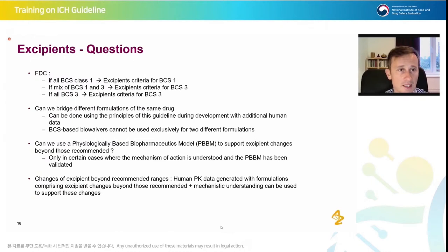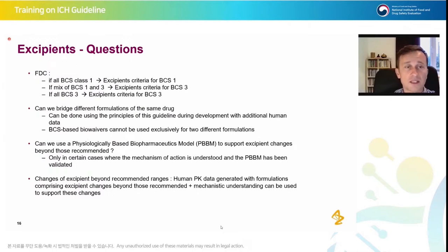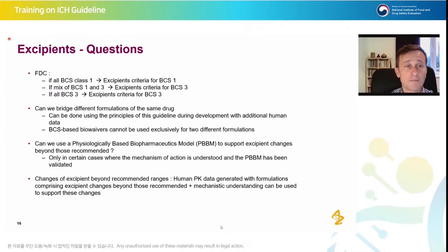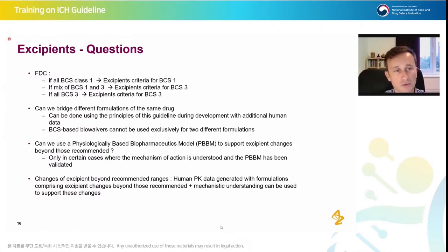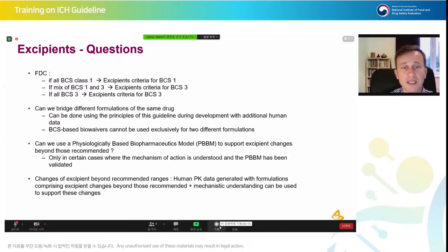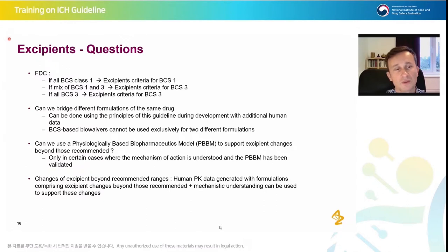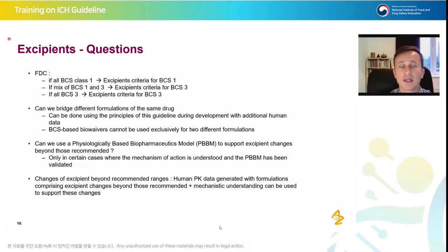For BCS Class 3 drugs, in addition to the not-more-than-10% limit for the sum of excipients that may affect absorption, there are more restricted values for specific excipient types, and you also need qualitative similarity for those excipients. For fixed dose combinations: if all drugs are BCS Class 1, apply BCS Class 1 excipient criteria; if one or all drugs are BCS Class 3, BCS Class 3 criteria apply. Physiologically-based biopharmaceutical models can be used to support changes beyond those recommended, only if the mechanism of action is understood and the PBBM was validated on that mechanism. If changes beyond recommended excipient limits are needed, human data must be generated to demonstrate no impact on exposure.